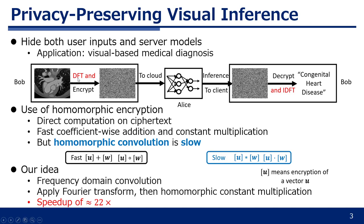We first apply the discrete Fourier transform and then encrypt the image. After getting the result, we apply the inverse DFT. Our observation is that DFT simplifies homomorphic convolution into constant multiplication, and it gives us up to 22 times acceleration.